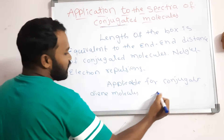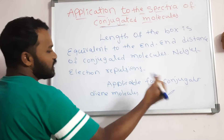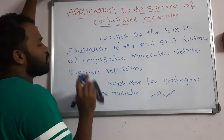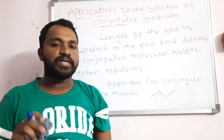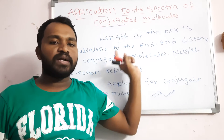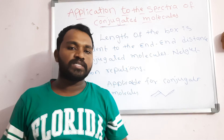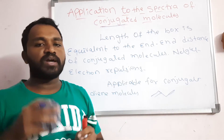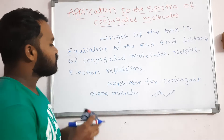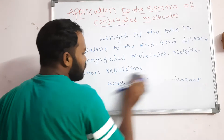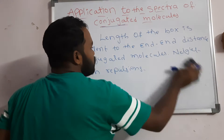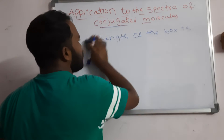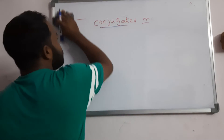So to summarize: the length of the box is equivalent to the end-to-end distance of a conjugated molecule. You should neglect electron repulsion. And you should apply this only for conjugated diene molecules.